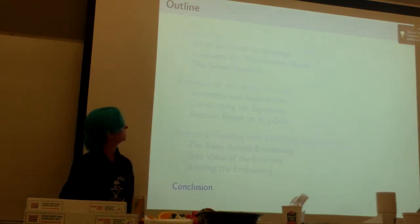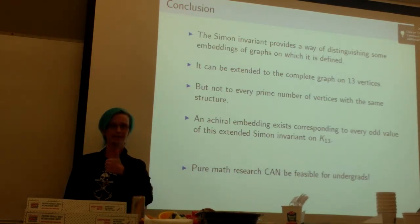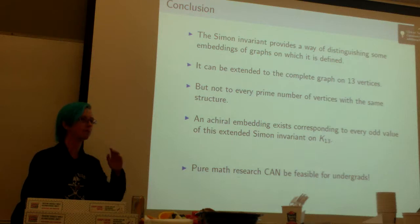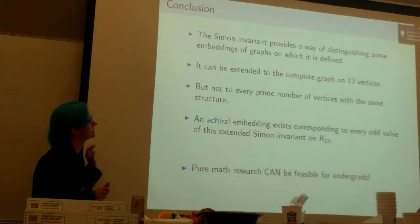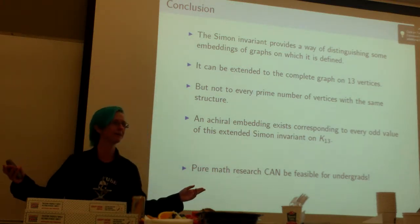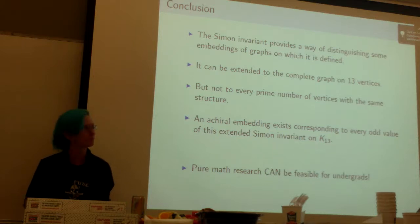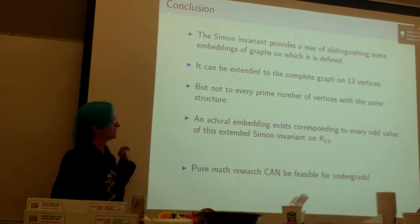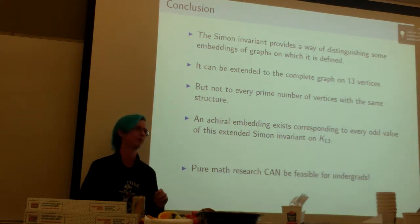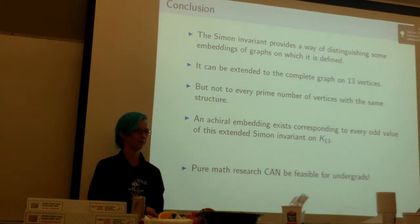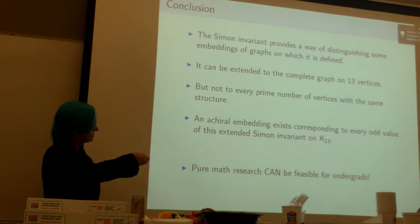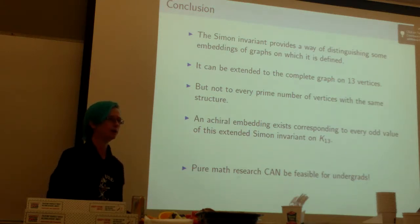So in conclusion, we created a new invariant for this particular graph by extending the Simon invariant. It allows us to tell the difference between certain embeddings, and you can see that because this whole family of achiral embeddings, every one of them has a different value of the invariant. And this worked for K13, but mysteriously that's the only prime number so far we found that it's worked for other than the original two. That's an interesting area for further study.